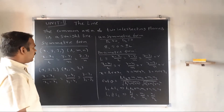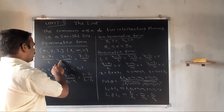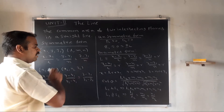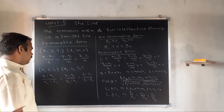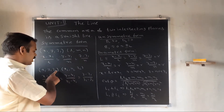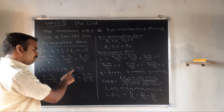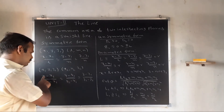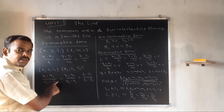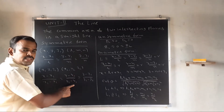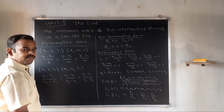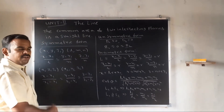The symmetric form of the line equation is (x − x1)/l = (y − y1)/m = (z − z1)/n. When we have two points (x1, y1, z1) and (x2, y2, z2), the equation becomes: (x − x1)/(x2 − x1) = (y − y1)/(y2 − y1) = (z − z1)/(z2 − z1). This is the symmetric form using two points.